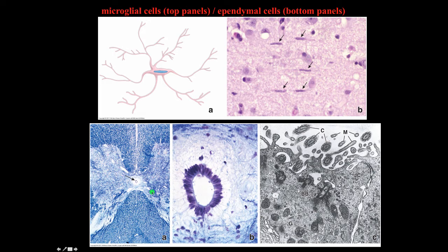Ependymal cells are shown on the bottom panel, lining the central canal in the spinal cord. You can see them at the electron microscopic level and they do put out some microvilli processes and some cilia.